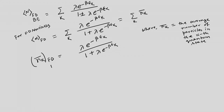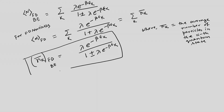For FD statistics, n_k average is lambda e to the minus beta epsilon_k by 1 plus lambda e to the minus beta epsilon_k. For BE statistics, we have a minus sign in the denominator. So n_k bar, the average number of particles in the kth quantum state, is lambda e to the minus beta epsilon_k by 1 minus lambda e to the minus beta epsilon_k.